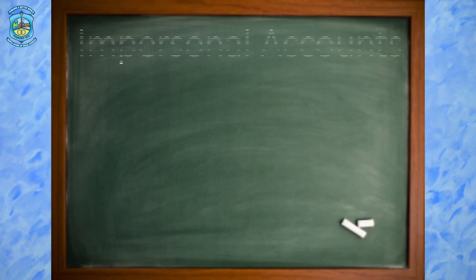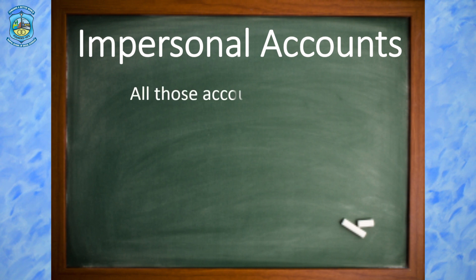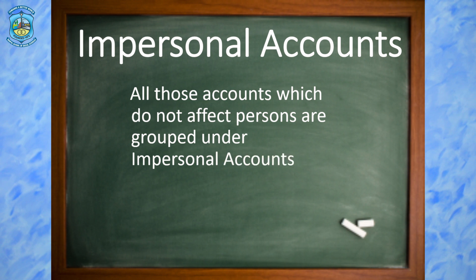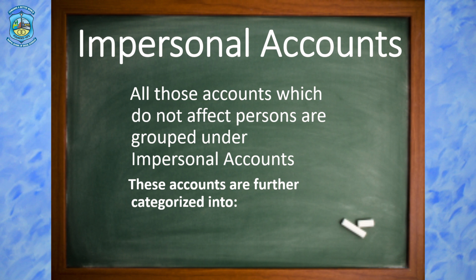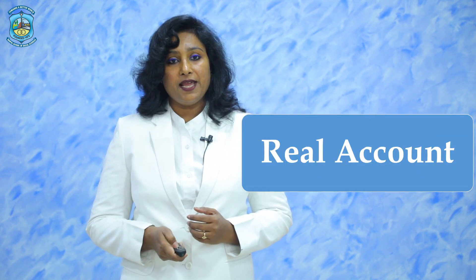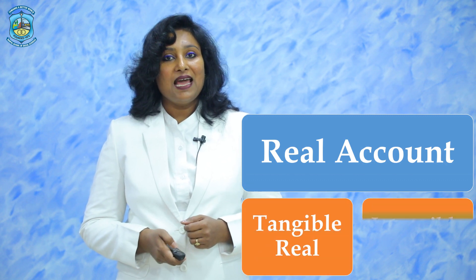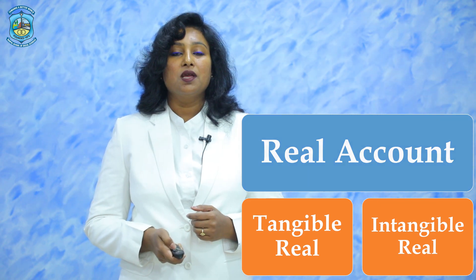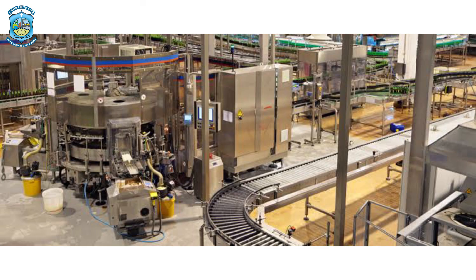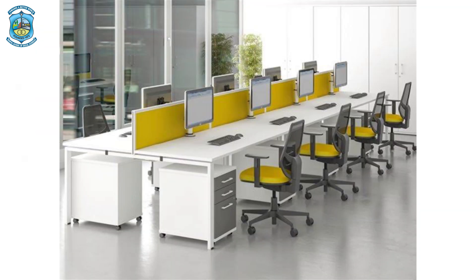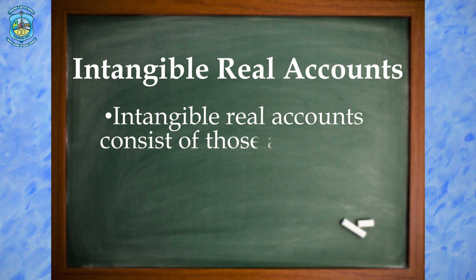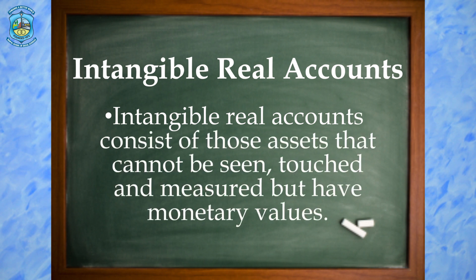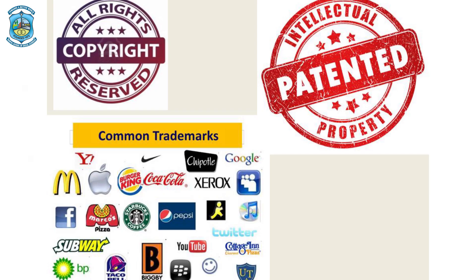Now we move to the impersonal account. The impersonal accounts are those accounts which do not affect any person or a group of persons. The impersonal account is divided in two categories: real account and nominal account. The real accounts include all the assets of a business enterprise. Real accounts can be divided in two parts: tangible real assets and intangible real assets. Tangible real assets include all the assets which can be touched, seen or measured — for example, plant and machinery, building, furniture, or the unsold stock kept in the godown. Intangible real accounts are those which cannot be touched or seen but have value for the business. The examples are copyright, patents and trademarks.